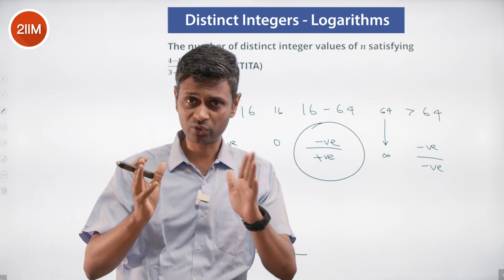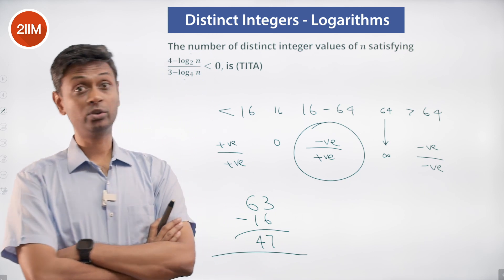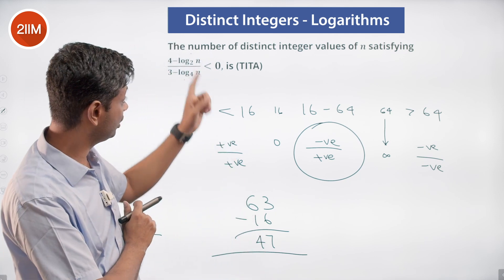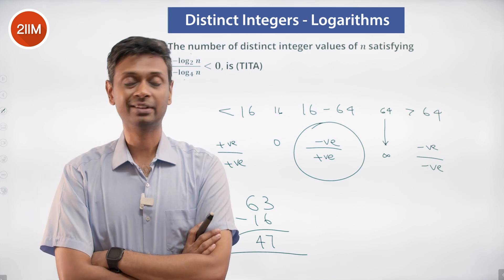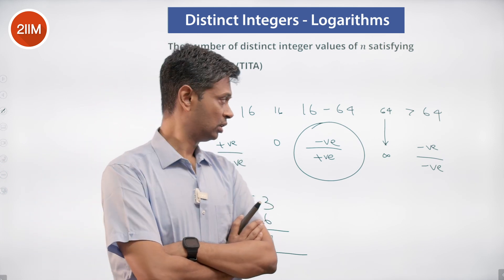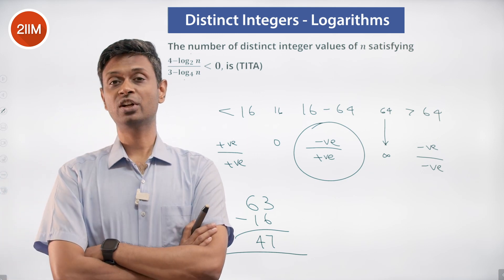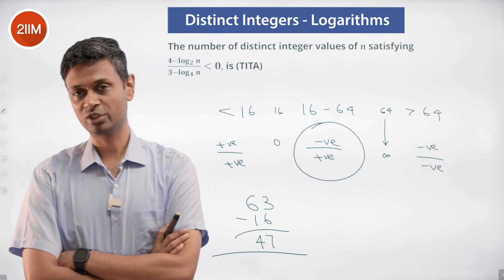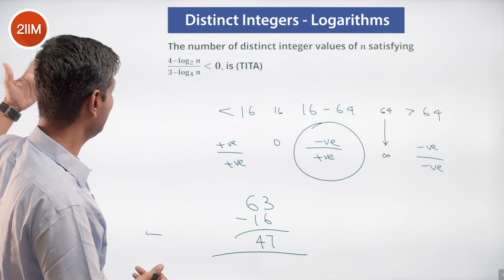Be careful about whether to count 16 and 64 — since it's strictly less than 0 (not less than or equal to), we exclude both endpoints. So the answer is all integers strictly between 16 and 64, which are 17 to 63 inclusive — all 47 integer values.